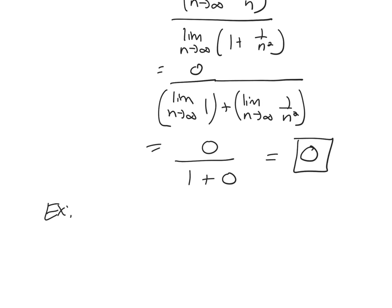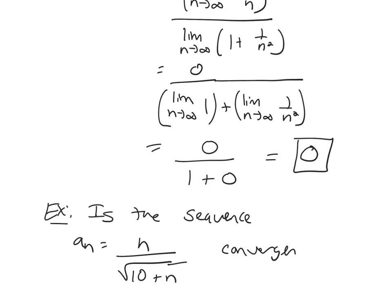So the first one is going to be, is the sequence a sub n which is n over the square root of 10 plus n convergent or divergent?